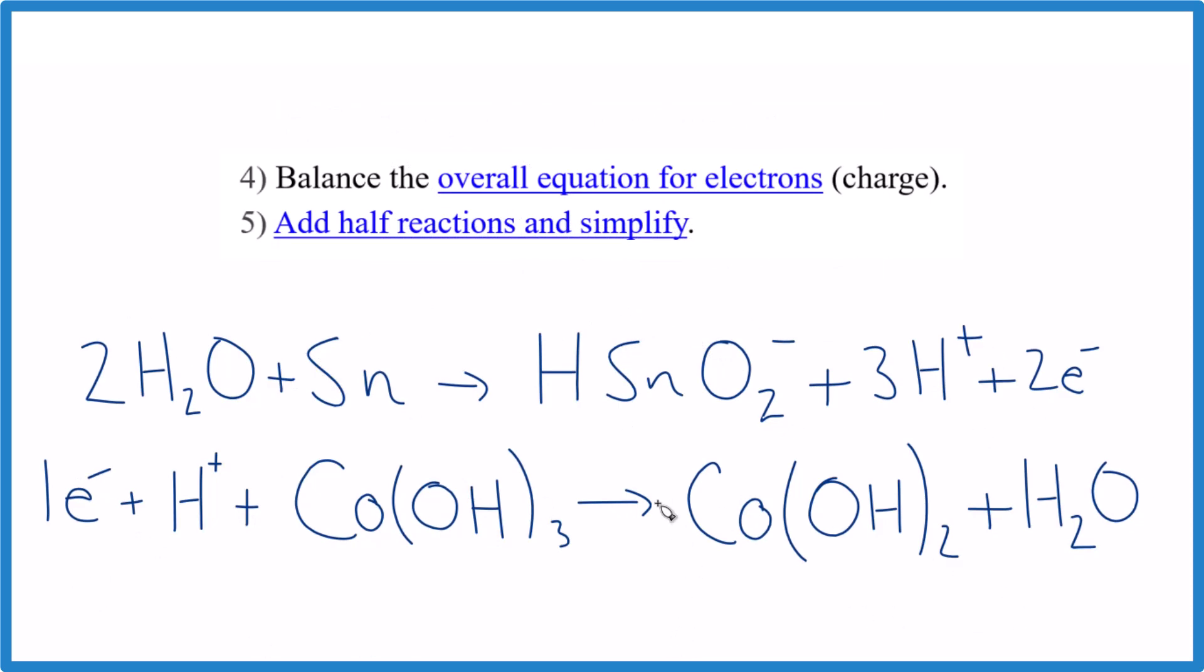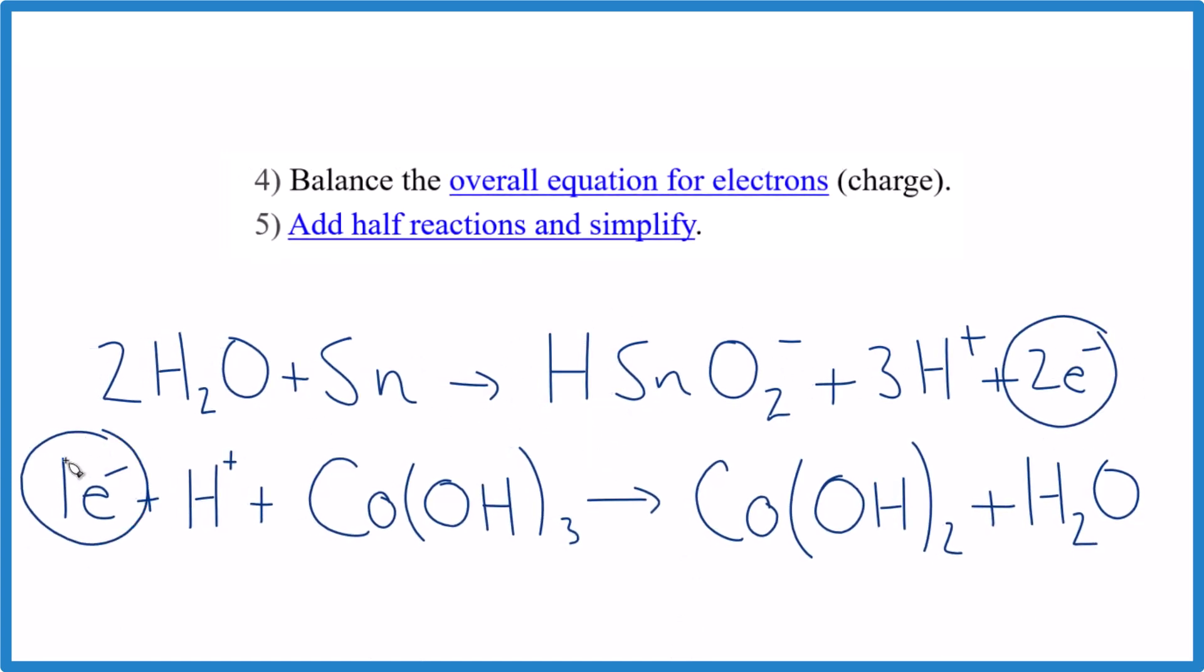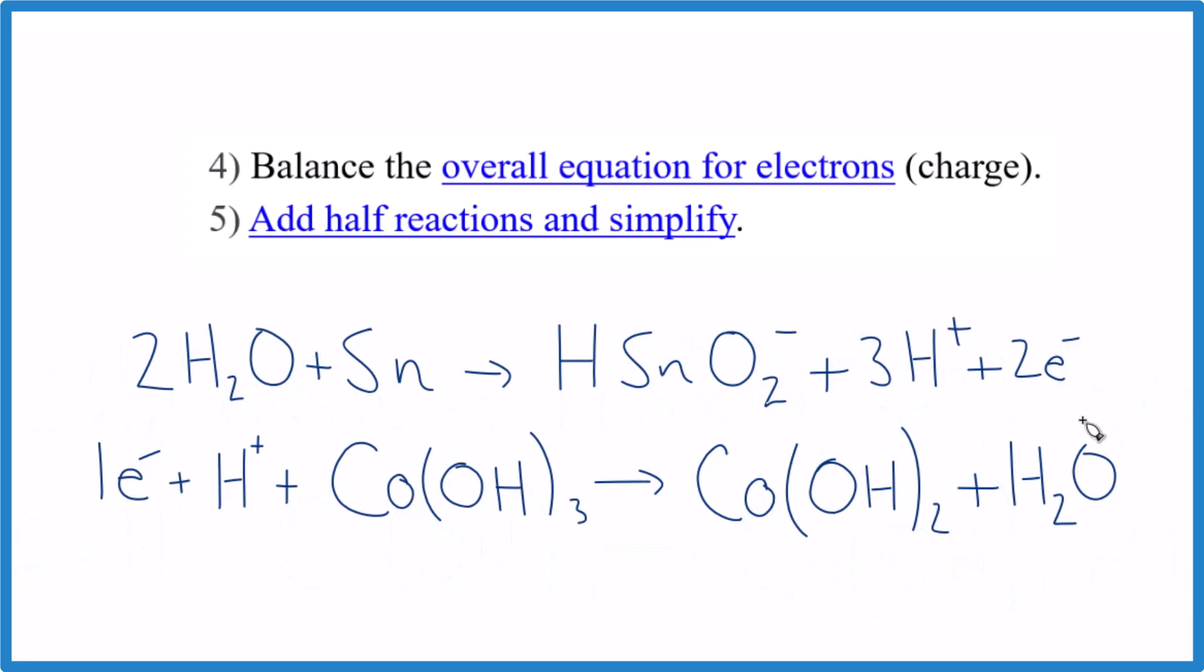We're going to make sure the electrons are the same for both half reactions, then we'll add them together, simplify, and we'll be mostly done. Here's our problem: we have two electrons here and one here, but they're the same electrons—these electrons were lost over here, gained here. This number has to match. We can multiply everything here by two, and that way we'd have two electrons here and two here.